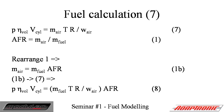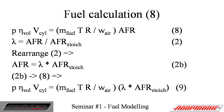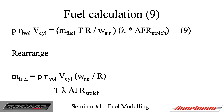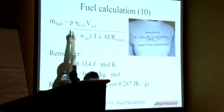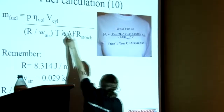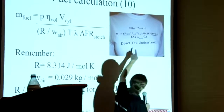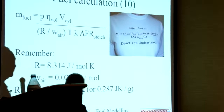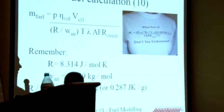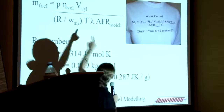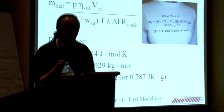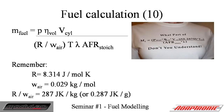We rearrange that and end up with the equation that is basically what's on the t-shirt. Fuel mass is that term. Manifold pressure is P. Volumetric efficiency is there. Cylinder volume is there. The gas constant divided by molecular weight, when worked out, is 287 in SI units — or 0.287 if you're doing fuel mass in grams. Then air temperature, lambda, and stoichiometric AFR. Now everyone should understand that t-shirt, if they didn't already.